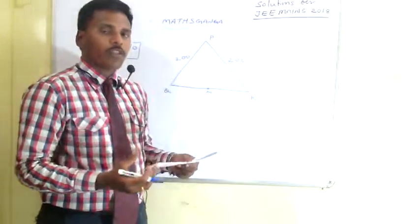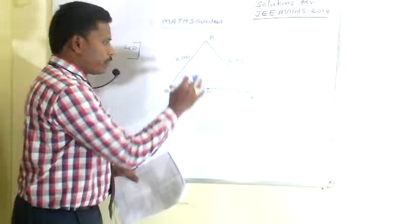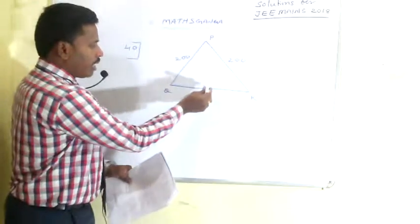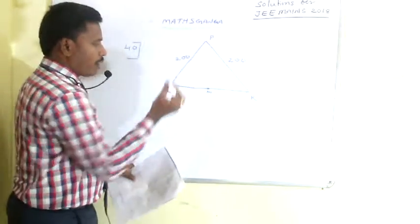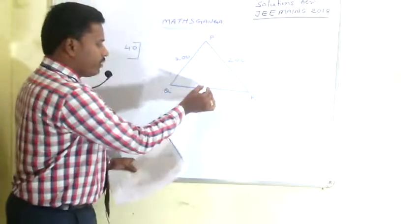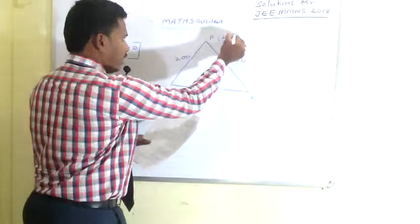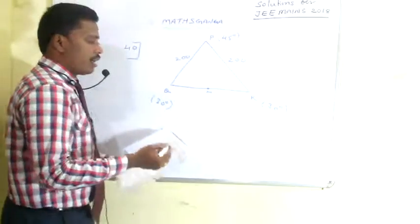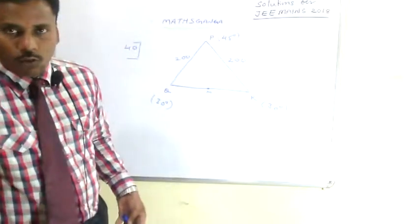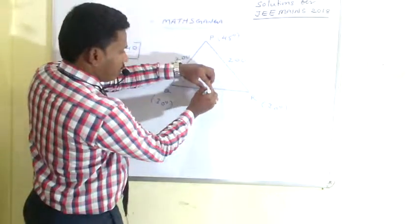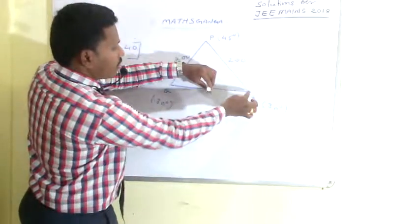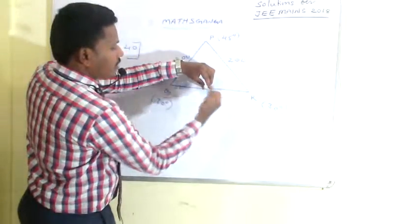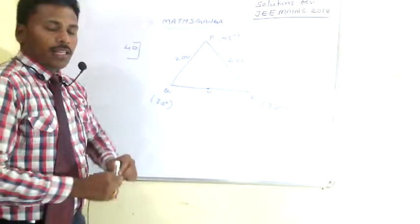This is a three-dimensional diagram, so we need to imagine it. The triangular park is an isosceles triangle since PQ equals PR equals 200 meters. The angles of elevation made by the TV tower: at P it is 45 degrees, at Q it is 30 degrees, and at R it is also 30 degrees. We need to calculate the height of the tower.